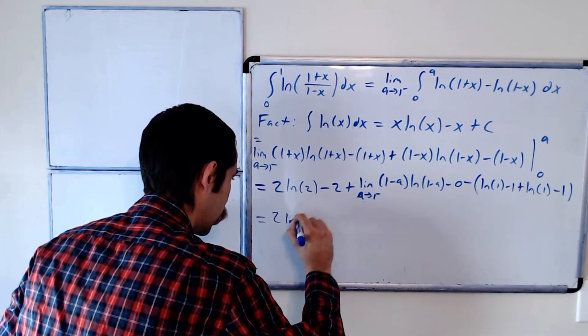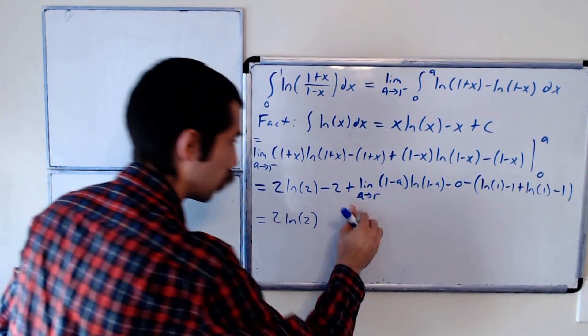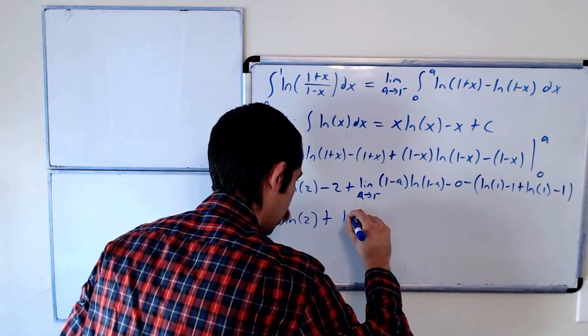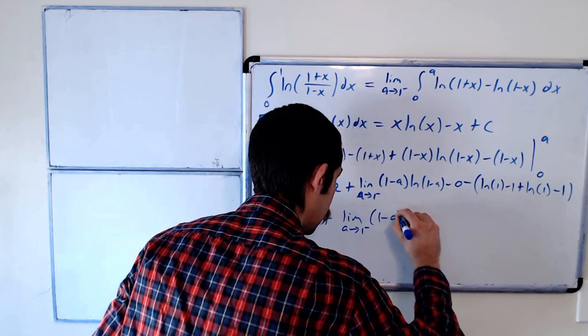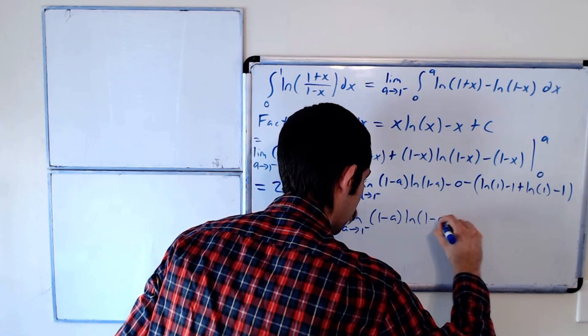So this is 2 ln of 2, plus the limit, as a goes to 1 from the left, of 1 minus a ln of 1 minus a.